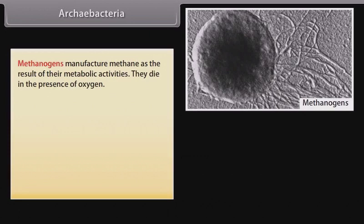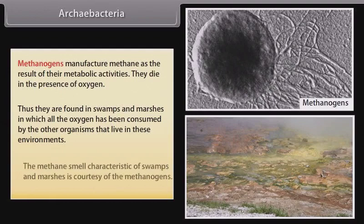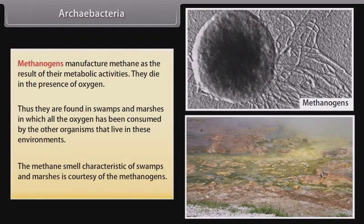Methanogens manufacture methane as the result of their metabolic activities. Methanogens die in the presence of oxygen, thus they are found in swamps and marshes in which all the oxygen has been consumed by other organisms. The methane smell characteristic of swamps and marshes is courtesy of the methanogens.